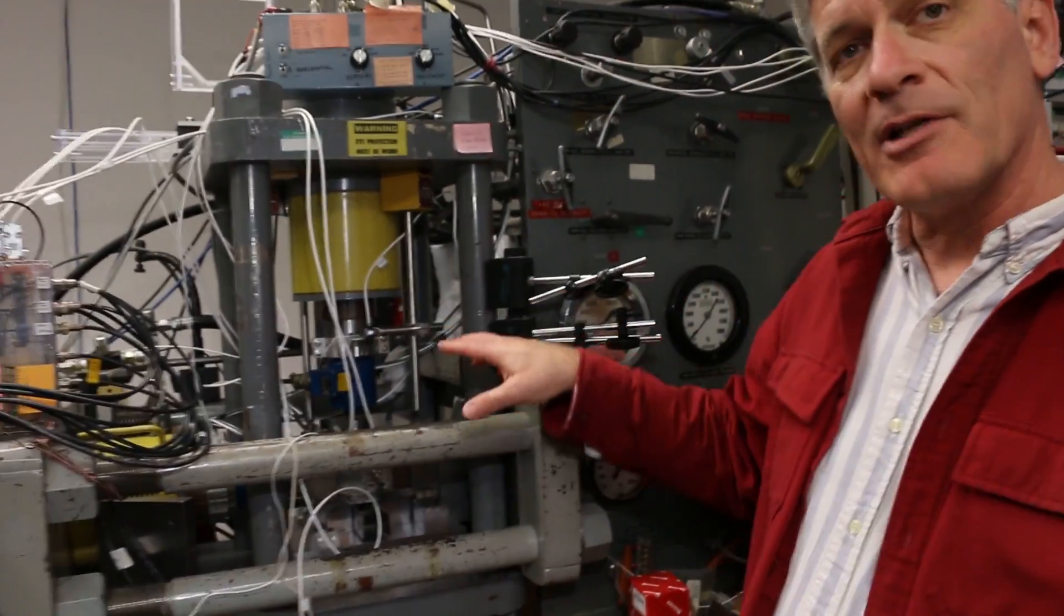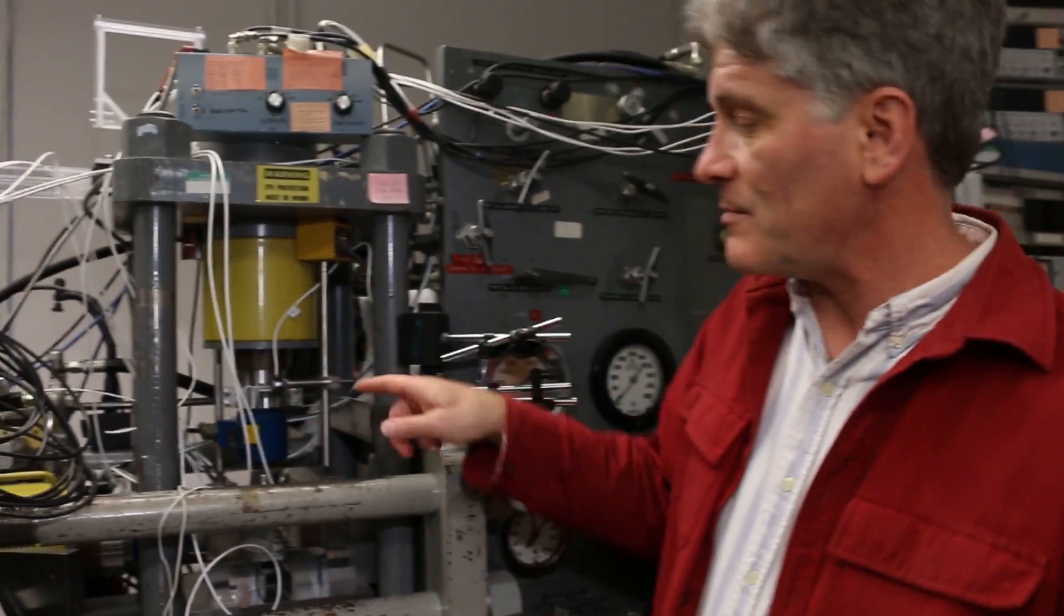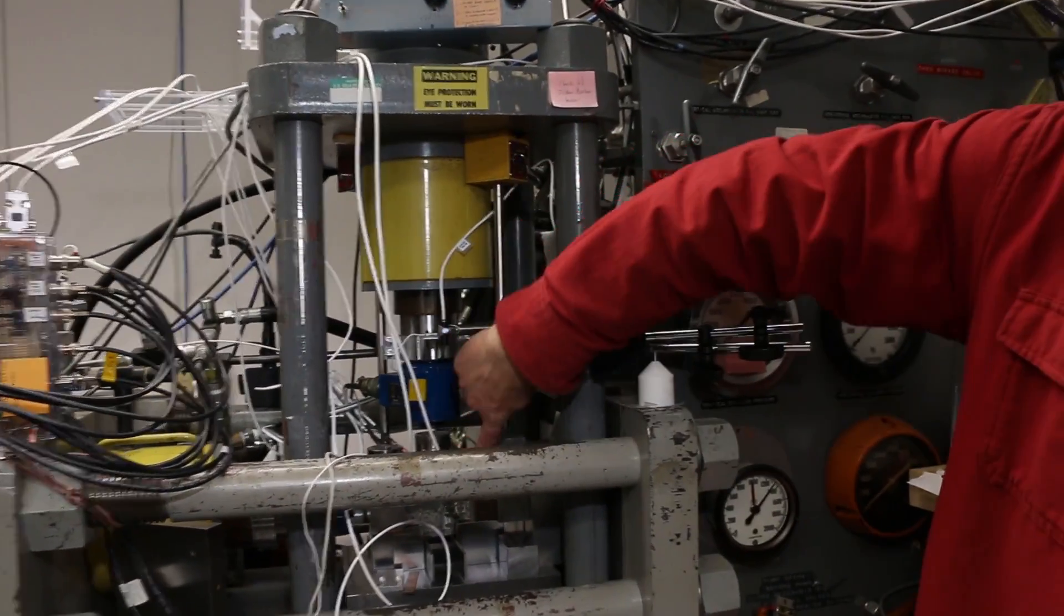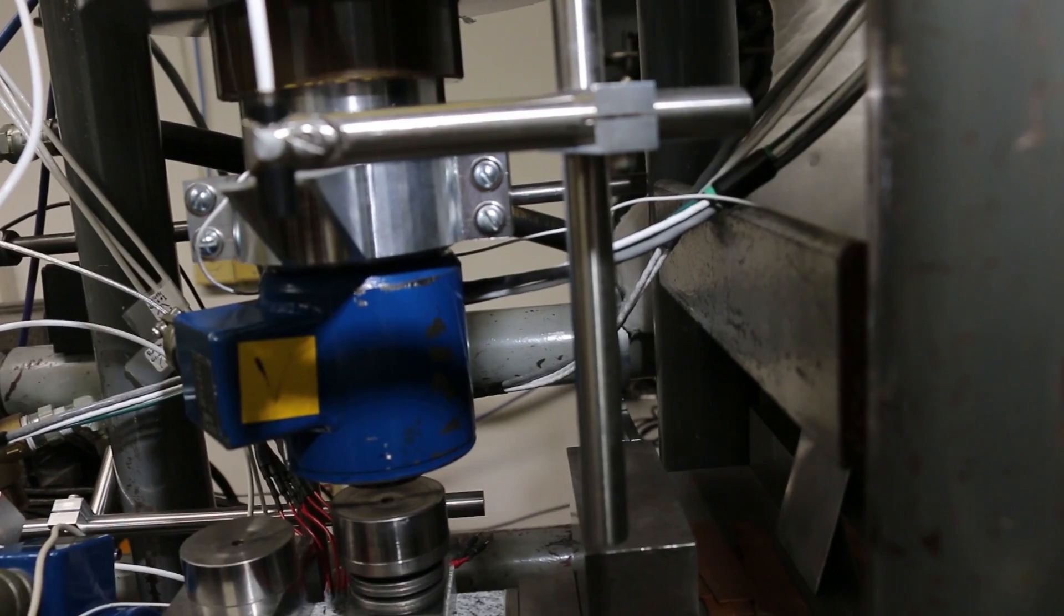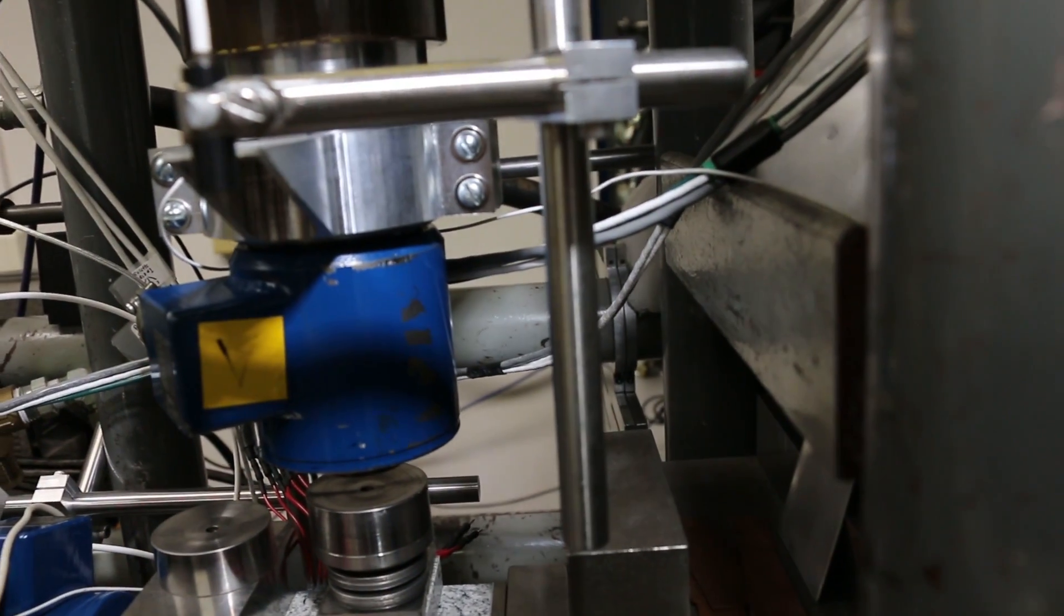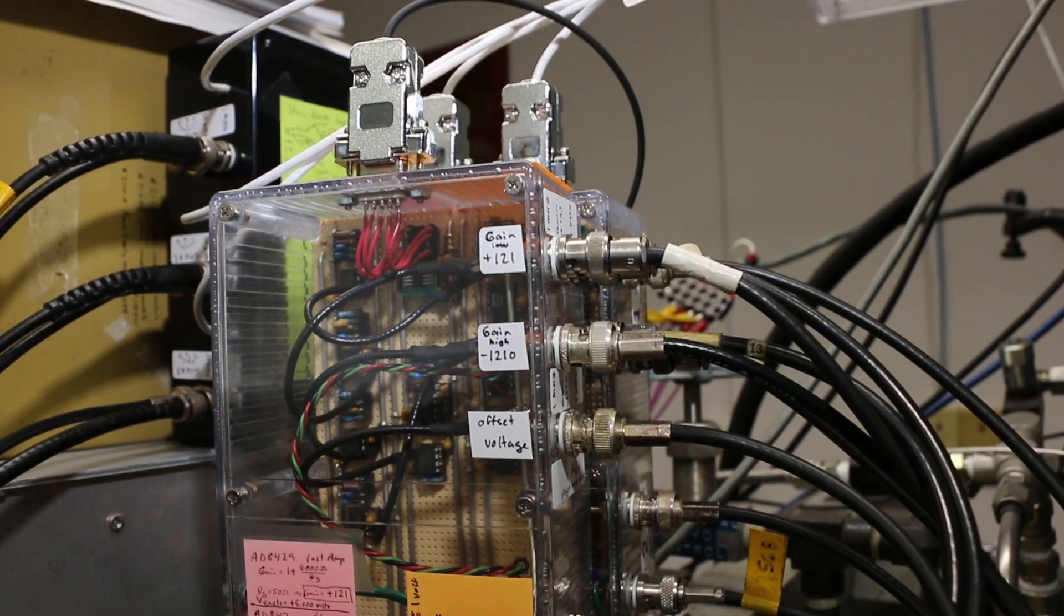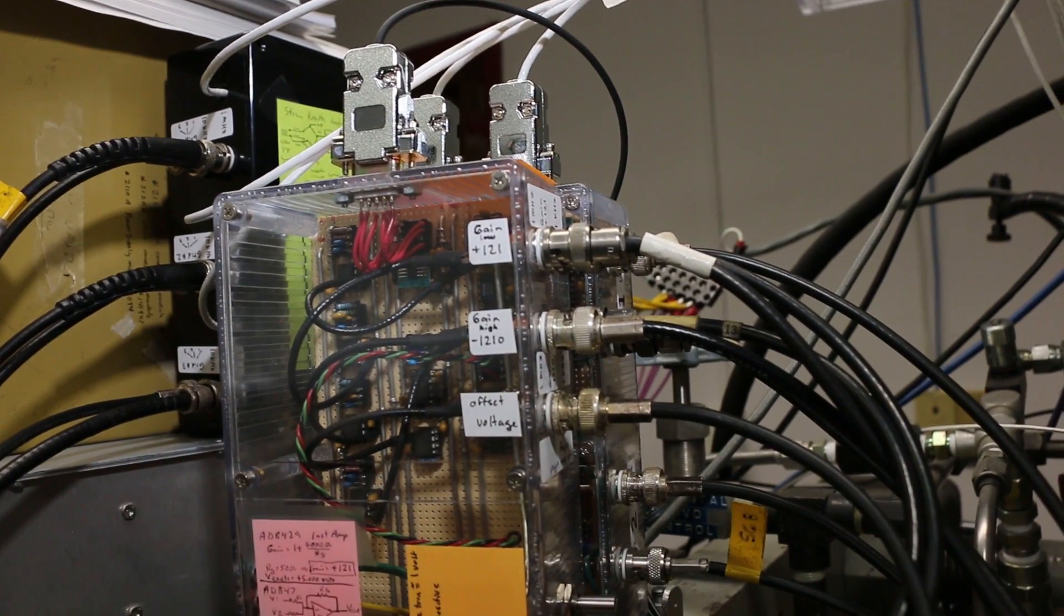This is the other piece of equipment in my lab. And in this machine, I use much smaller samples of rock here. And in this machine, I look at the microscopic aspects of friction as it relates to earthquake physics.